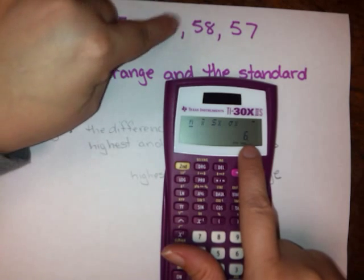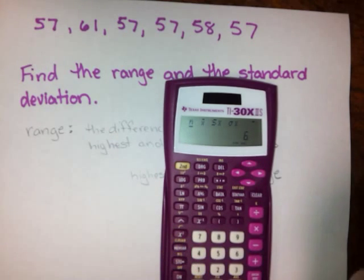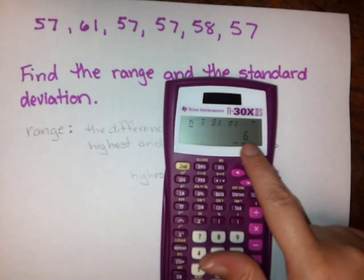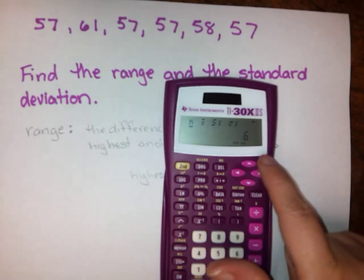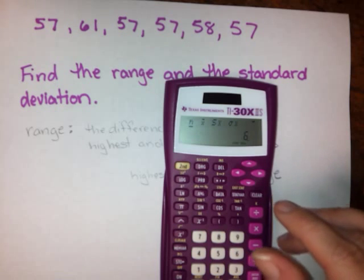So this should have, my list should have six items. One, two, three, four, five, six. So maybe you chose to enter all of the 57's at the same time and you miscounted. And you only ended up with five things in your list. Then you need to go back and re-enter the data to make sure that you got it all in there.